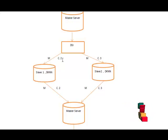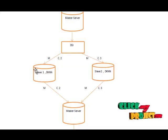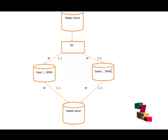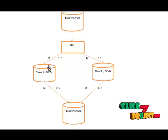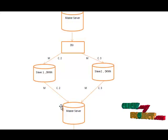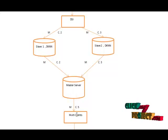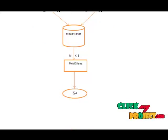Two clients are assigned to Slave 1 server, meaning many clients can access it. Three clients are assigned to Slave 2 server. Then Slave 1 server and Slave 2 server finish the client requests and send results back to the master server. The master server then replies to the multiple clients, and the process is finished.